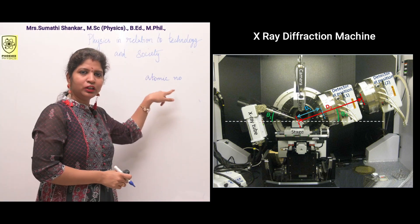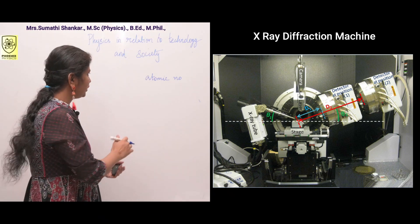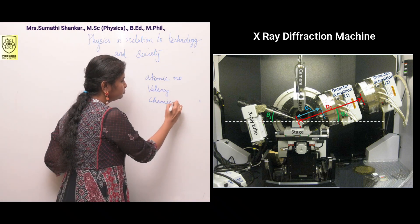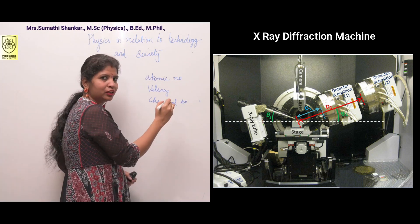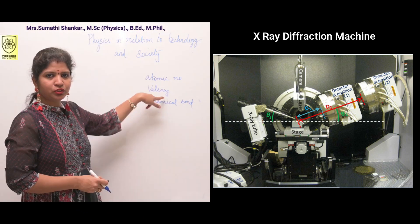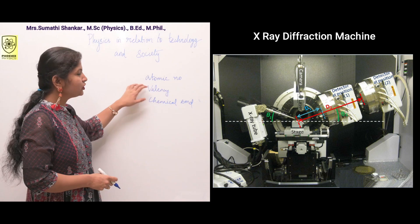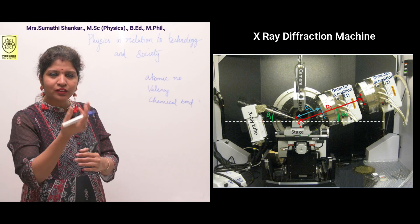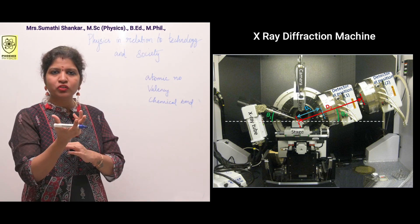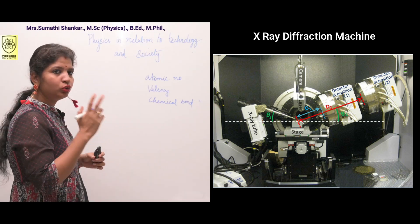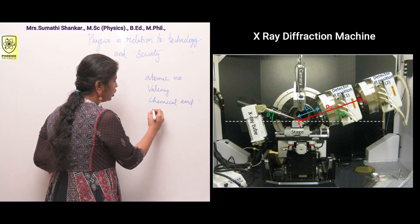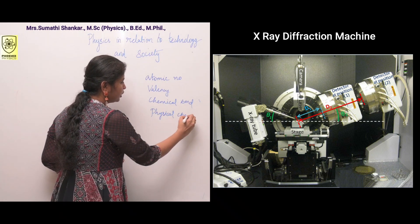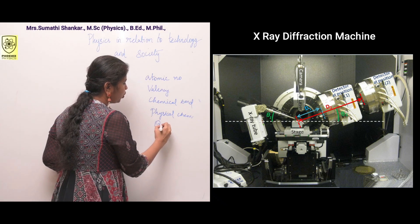These studies help researchers arrange elements in the periodic table based on atomic number. From this atomic number we can study valency, chemical bonds between atoms, and complex chemical structures. What is valency? It's the combining capacity of elements. Chemical bond is the sharing or accepting of electrons and forming new bonds. There are two important branches in chemistry: physical chemistry and quantum chemistry.